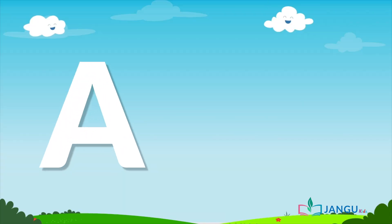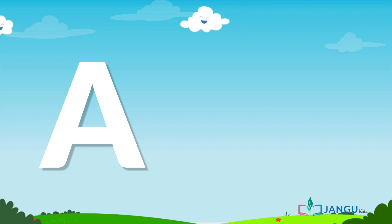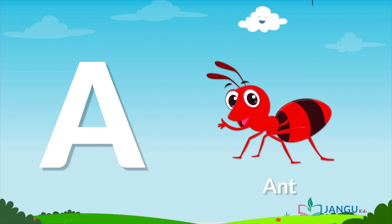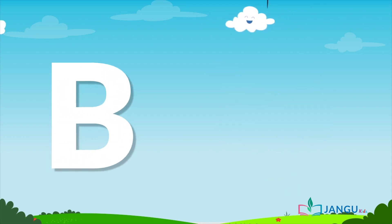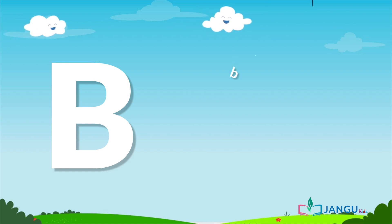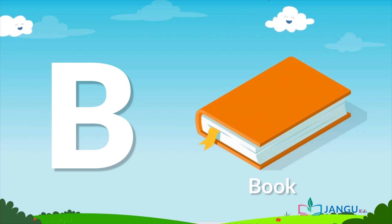A is pronounced as 'A' — A, A, A, A. Say after me: A, A, A, A. As in ant. B is pronounced as 'B' — B, B, B, B. Say after me: B, B, B, B. As in book.